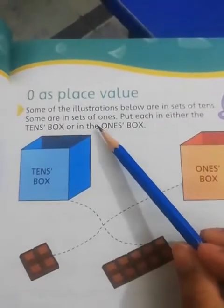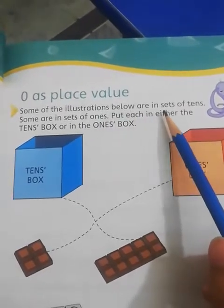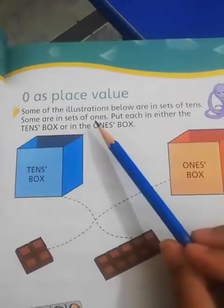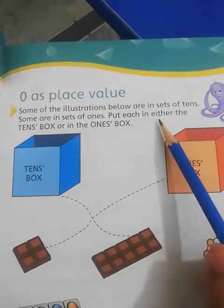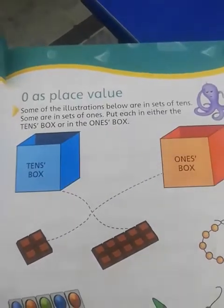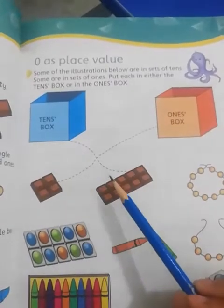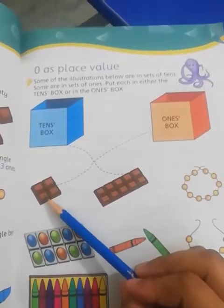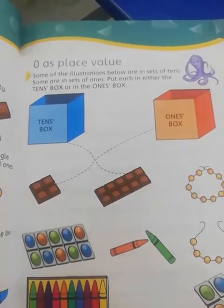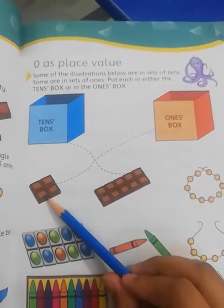Now you have an activity about place value. Some of the illustrations below are in sets of tens, some are in sets of ones. Put each in either the tens box or the ones box. Look at this activity — if you count and get four, four is a single digit, so it goes in ones.